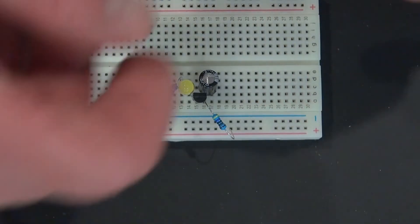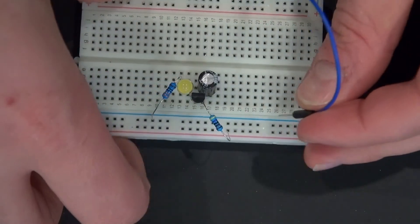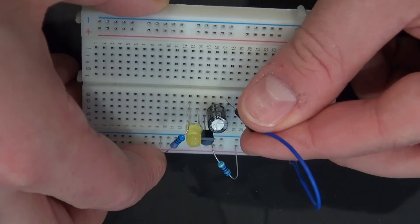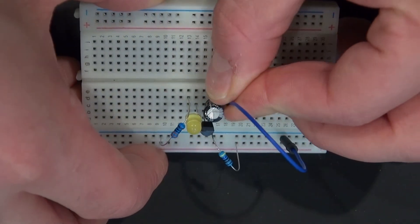Now take your jumper cable and connect it to the negative rail and connect that to the negative part of your capacitor.